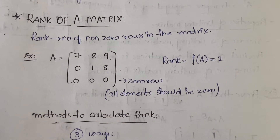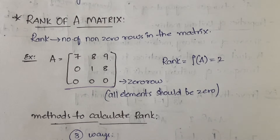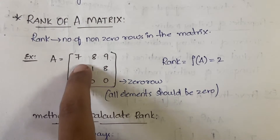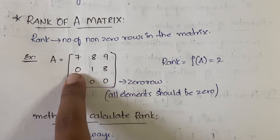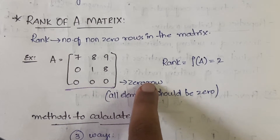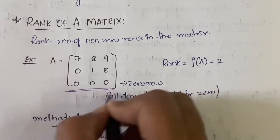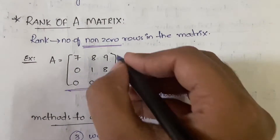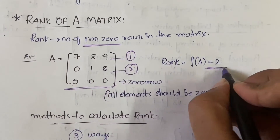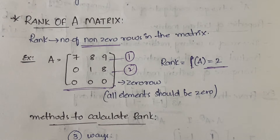So what is the rank of this matrix? It is 2. Why? Because — how many non-zero rows do you have? You will call it a zero row only if all the elements are zero. Even if one element is zero but others are not, you cannot call it a zero row. In the third row we have all elements zero, so that is a zero row. We have two non-zero rows, therefore the rank is 2. Rank is usually denoted with the symbol ρ, so ρ(A) = 2.